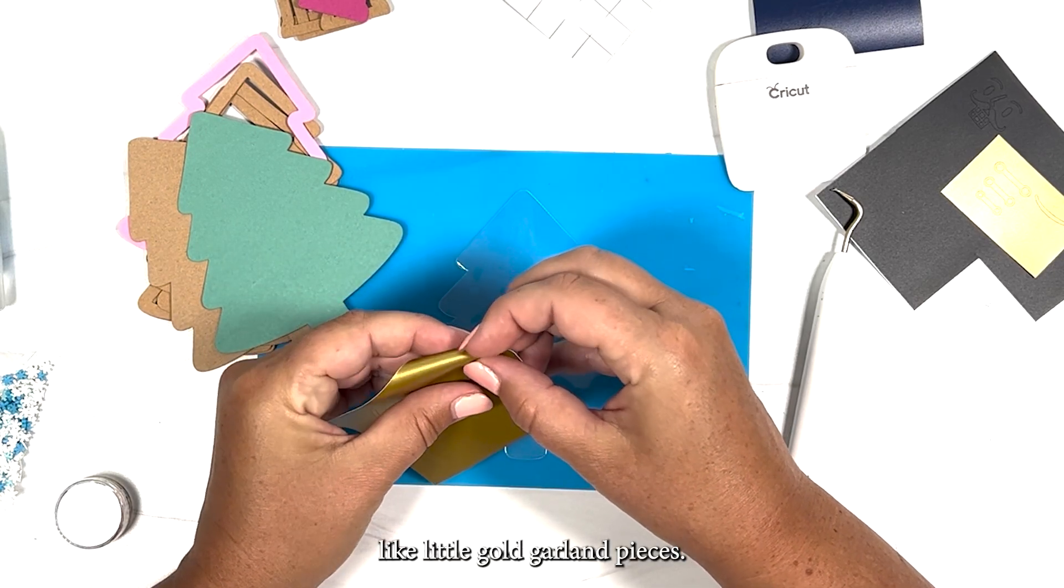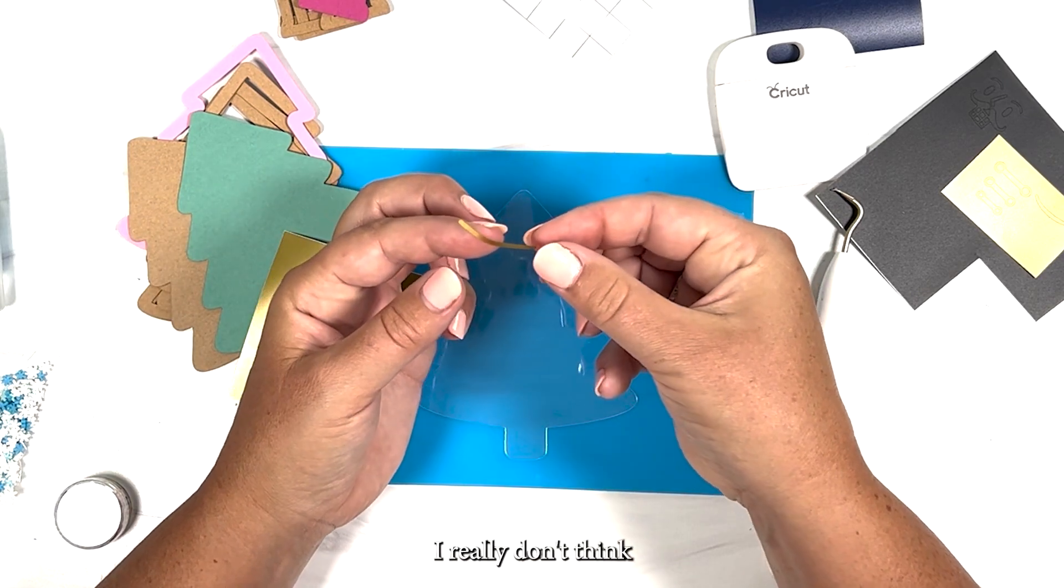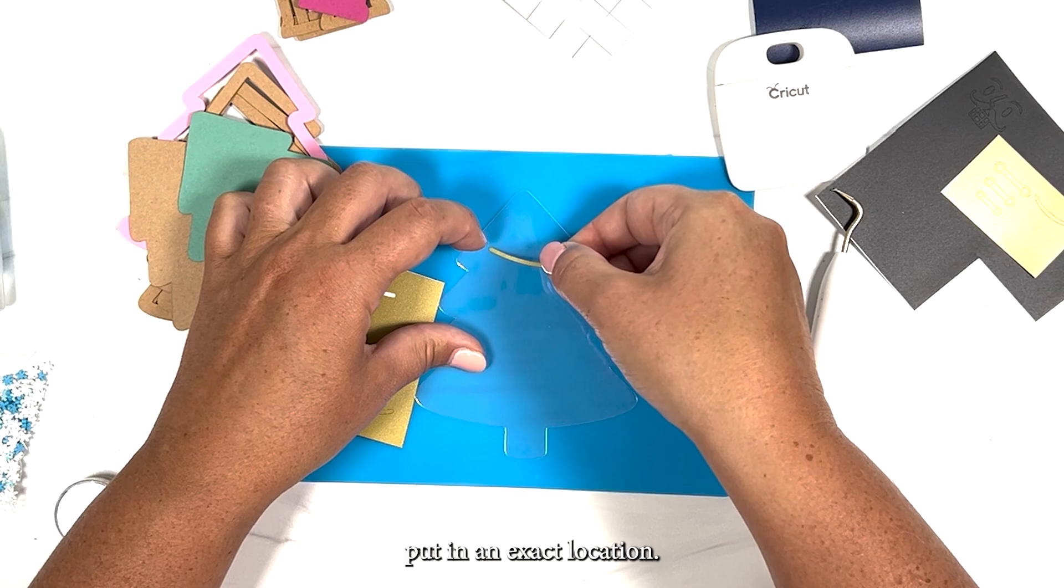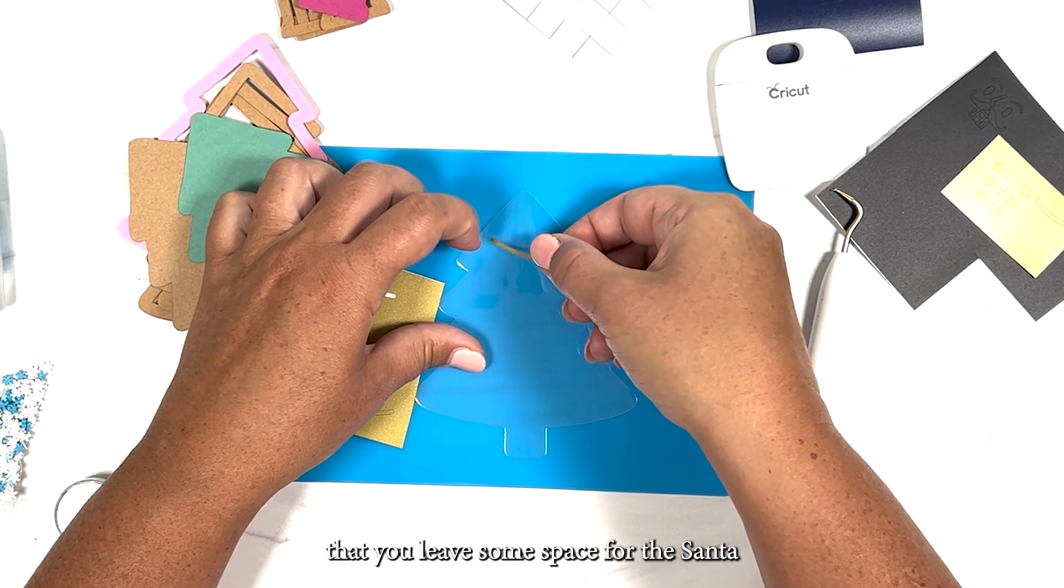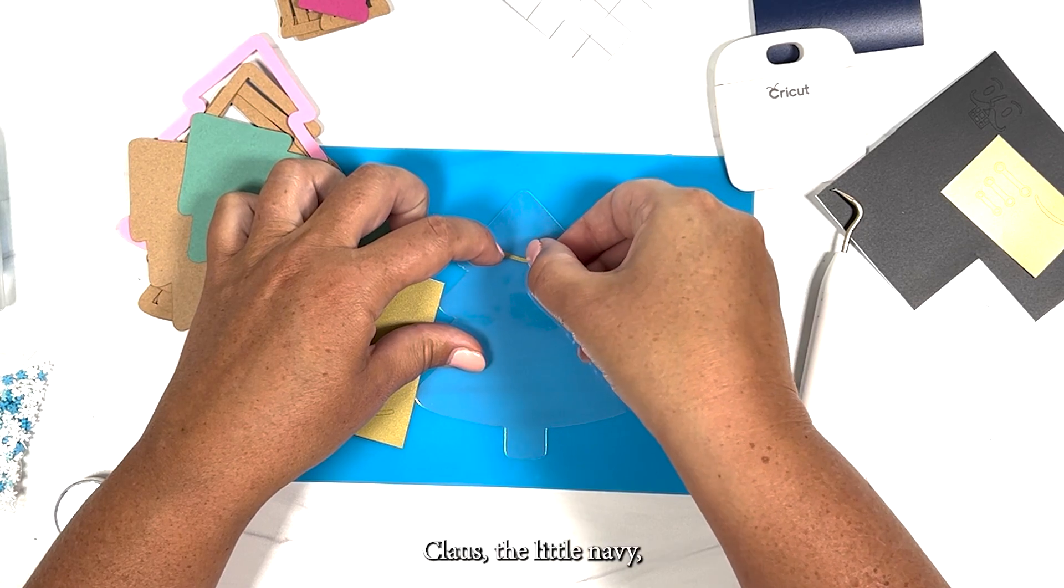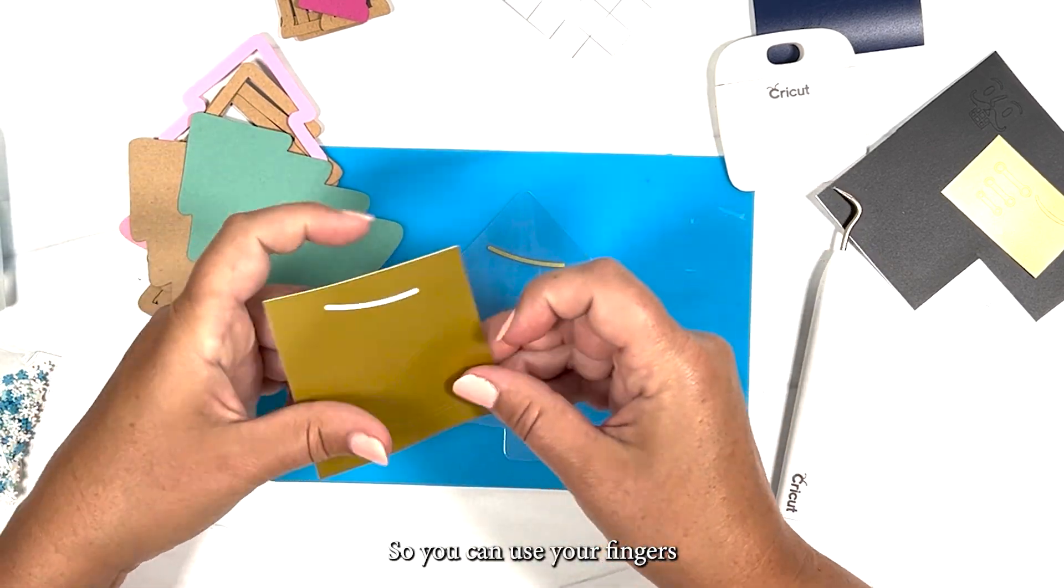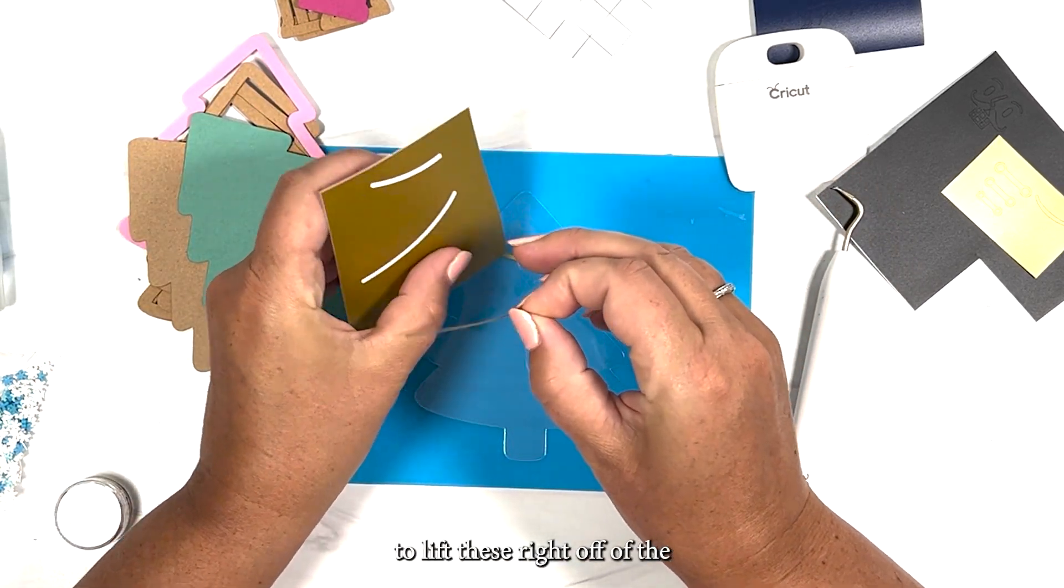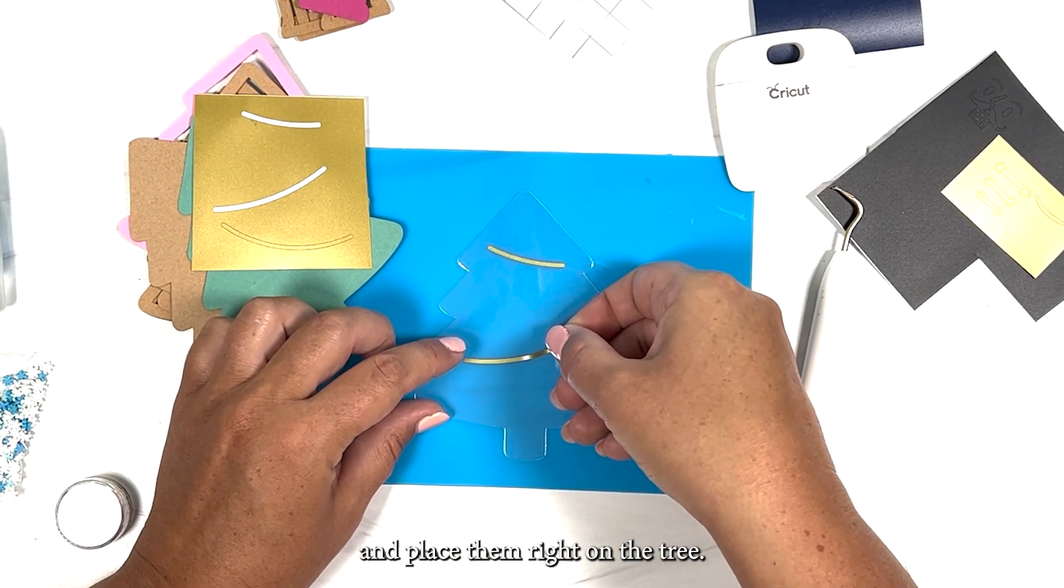For these little gold garland pieces I am just using my fingers. I really don't think you need to use transfer tape for this. It doesn't have to be put in an exact location. You just want to make sure that you leave some space for the Santa Claus, the little navy Santa Claus and reindeer that will fly across the tree. So you can use your fingers or you can use your weeding tool to lift these right off of the vinyl cutout and place them right on the tree.